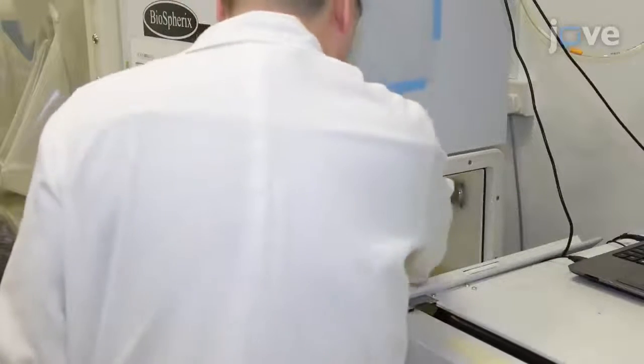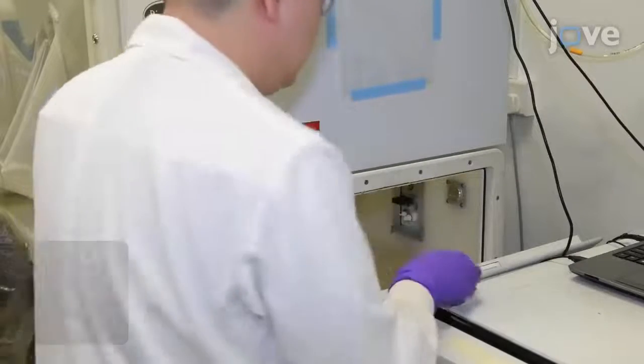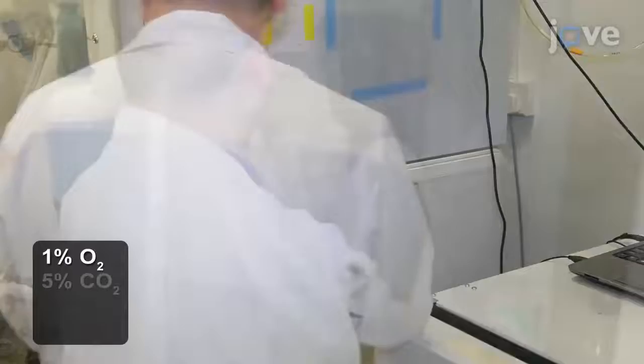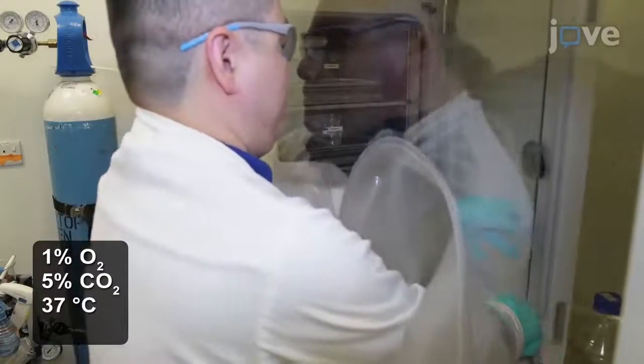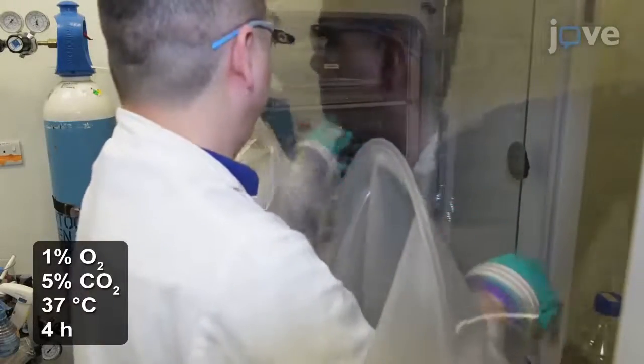24 hours after seeding, when the cells have reached 80 to 90% confluency, put two dishes into the hypoxia subchamber in the incubator glove box with 1% oxygen and 5% carbon dioxide at 37 degrees Celsius for 4 hours.